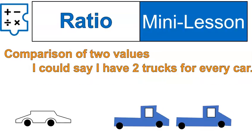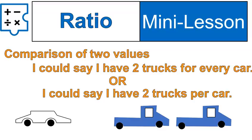I could say I have two trucks for every car, or I could say I have two trucks per car. And that is one way we could compare. We could also compare the opposite way. I could say I have one car per two trucks.